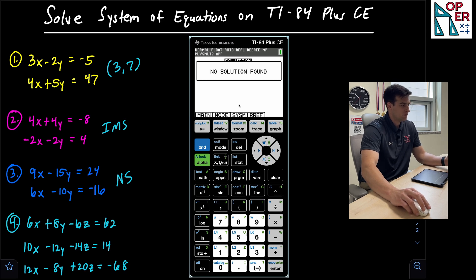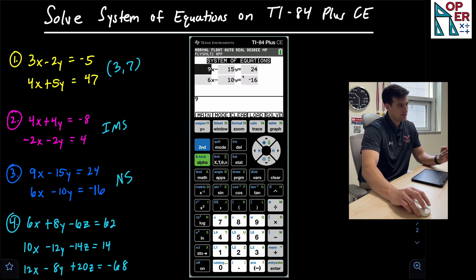Now for my option number four, if I just hit zoom, it's going to take me back to just two equations, two variables. So what I want to do is actually hit the Y equals button. And that takes me to the main menu.